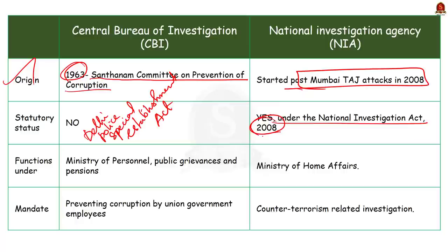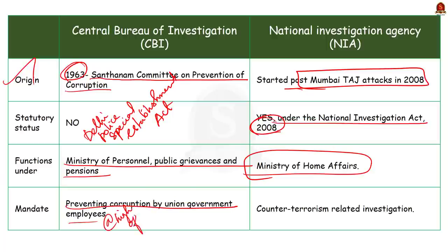So now coming to the ministries under which these institutions function. CBI functions under the Ministry of Personnel, Public Grievance and Pensions. While the NIA they function under the Ministry of Home Affairs. Now coming to the specific roles assigned to these two institutions. CBI functions with a special mandate of preventing corruption by union government employees who are holding high offices. It also takes up certain types of cases which remain unsolved by the state police on demand by the concerned state police or under the order of the concerned high court. So now coming to NIA its primary objective is to stop terrorist attacks being carried out within the territory of India. It specializes in counter-terrorism related investigation.